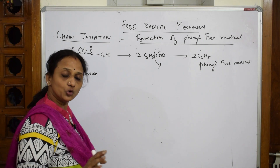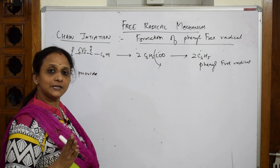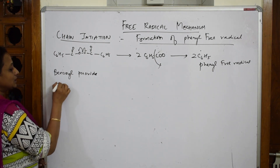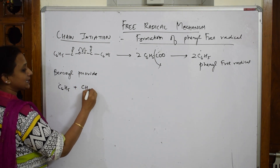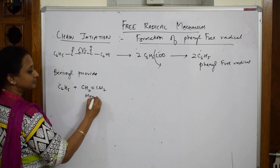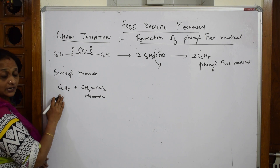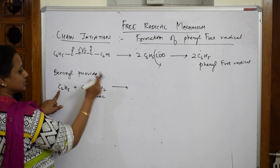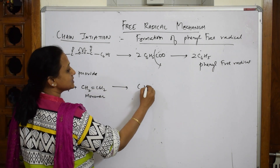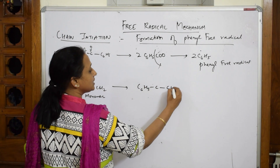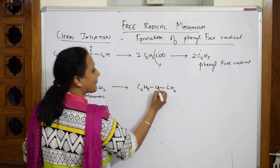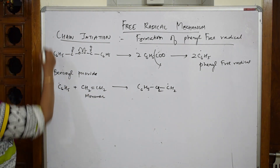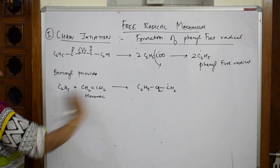After the phenyl free radical is formed in the chain initiation step, we require a monomer, which should be an alkene or its derivatives. The phenyl free radical joins with the alkene monomer. The double bond breaks and you get C6H5-CH2-CH2• - a new free radical is formed.